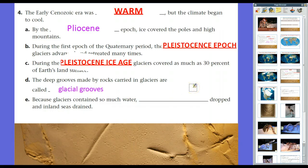And these grooves are what we call glacial grooves. I know, really tough to figure out. But anyway, so that's the geologic evidence of glacial movement. And because glaciers contain so much water, the sea levels dropped and inland seas drained out.